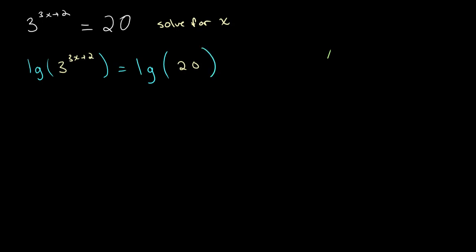And remember we don't want to have x in our power over here because we don't know how to solve for that without removing it from the power. So we want to use the power law to bring this expression down here. So we get 3x plus 2 times lg of 3 is equal to lg of 20.